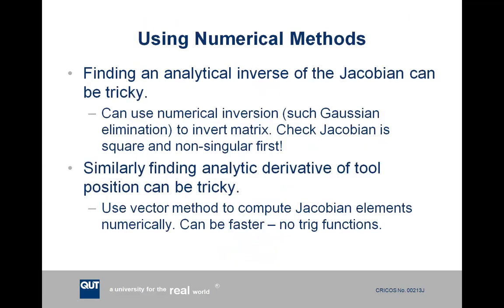So sometimes you have to use numerical methods to do some of the stuff like finding the inverse of the Jacobian when an analytical method is not feasible. You can use techniques, numerical inversion techniques. One of these is Gaussian elimination, which is just an ordered process of essentially simultaneous equations. But you should check that your Jacobian is square and non-singular first, so that there is possibly an answer.